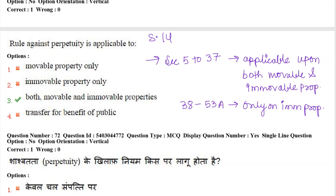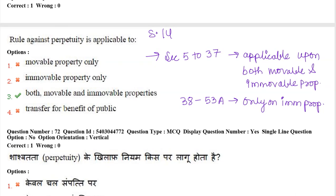Next: rule against perpetuity is applicable to what? Rule against perpetuity is defined in section 14 of the TPA. Sections 5 to 37 of TPA are applicable to both movable and immovable property. Sections 38 to 53A are applicable only to immovable property.